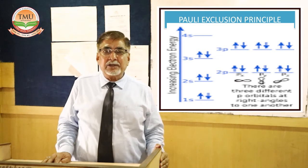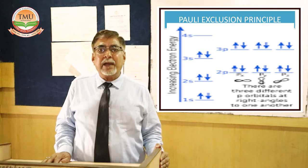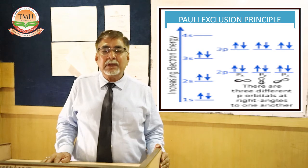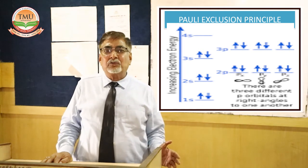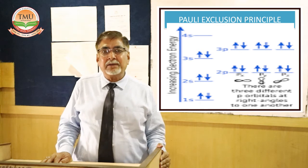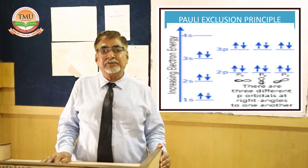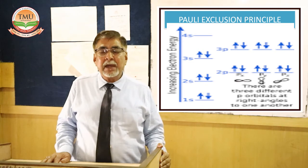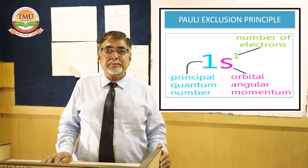Similarly, in the D orbitals there are five sub-orbitals, so all five are filled singly first. When the sixth electron arrives, pairing starts, continuing through the seventh, eighth, ninth, and tenth. The first electron in each orbital goes clockwise and the paired second electron goes anticlockwise. In the F orbital, which has seven sub-orbitals, all seven are filled singly before pairing begins.